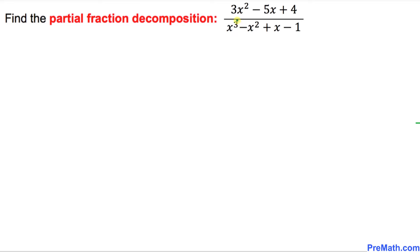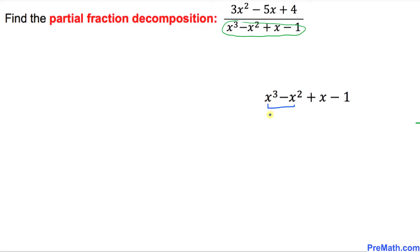Let's focus on the denominator part only over here. I have copied it down right up here and let's go ahead and find the factors. Looking at the first two terms, we can see that x squared is in common so we can factor x squared outside.